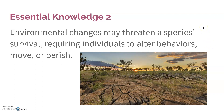Environmental changes may threaten a species' survival, requiring individuals to alter behaviors, move, or perish. As we're seeing with climate change now, it's happening so rapidly that the natural process of evolution can't keep up. Evolution is supposed to be a long, drawn-out process, so when you throw in something that happens really fast, you can't just say 'okay, I've adapted now.'